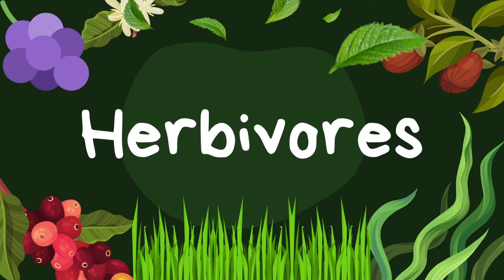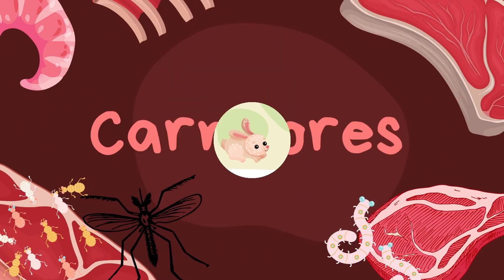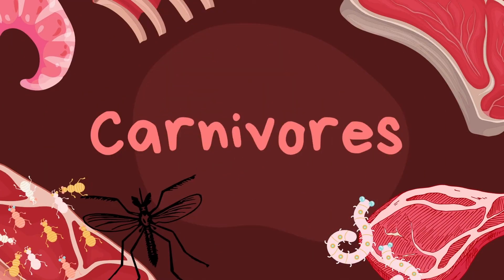Herbivores eat fruits and vegetables, grass, plants, and leaves. Some examples of herbivores are cows, goats, rabbits, deer, and giraffes.